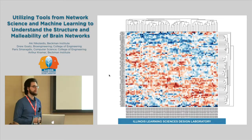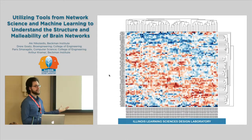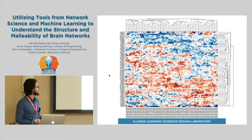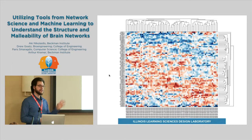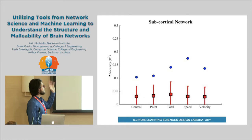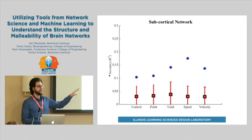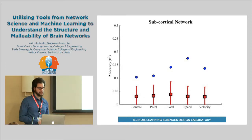A subcortical network is a network in the brain that's really important for procedural learning, like learning how to ride a bike or how to play piano. We thought that if this network is informative with regards to how well procedural learning is going to happen, then based on how well people's brains are wired up in this network, we should be able to predict how well they're going to perform in a procedural learning task. And that's what we did — we fed that information into our machine learning algorithm and found that we could predict better than chance in all of the different subtasks within this procedural learning task.